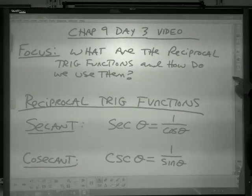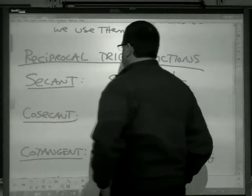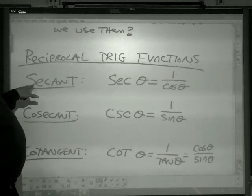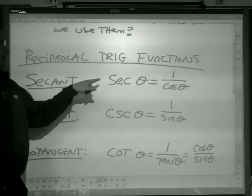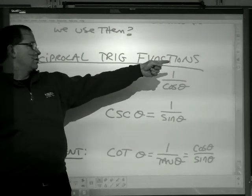So we have three reciprocal trig functions. We have secant, which is symbolized by SEC, secant theta. And that is the flip of the cosine, so it's 1 over cosine.